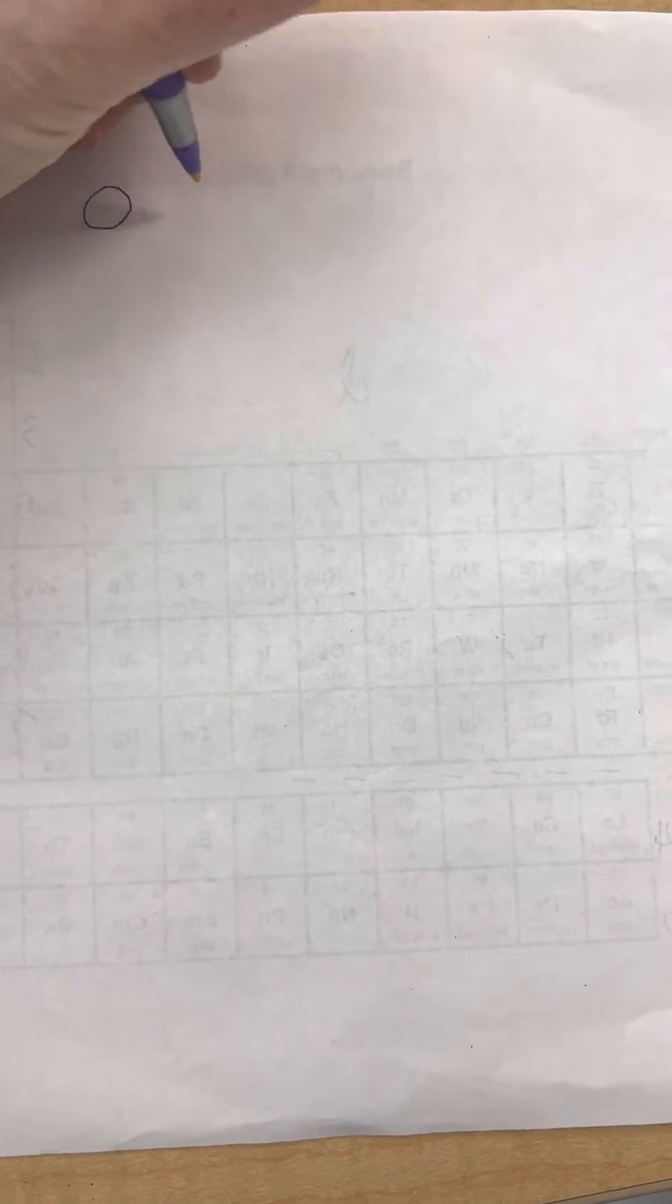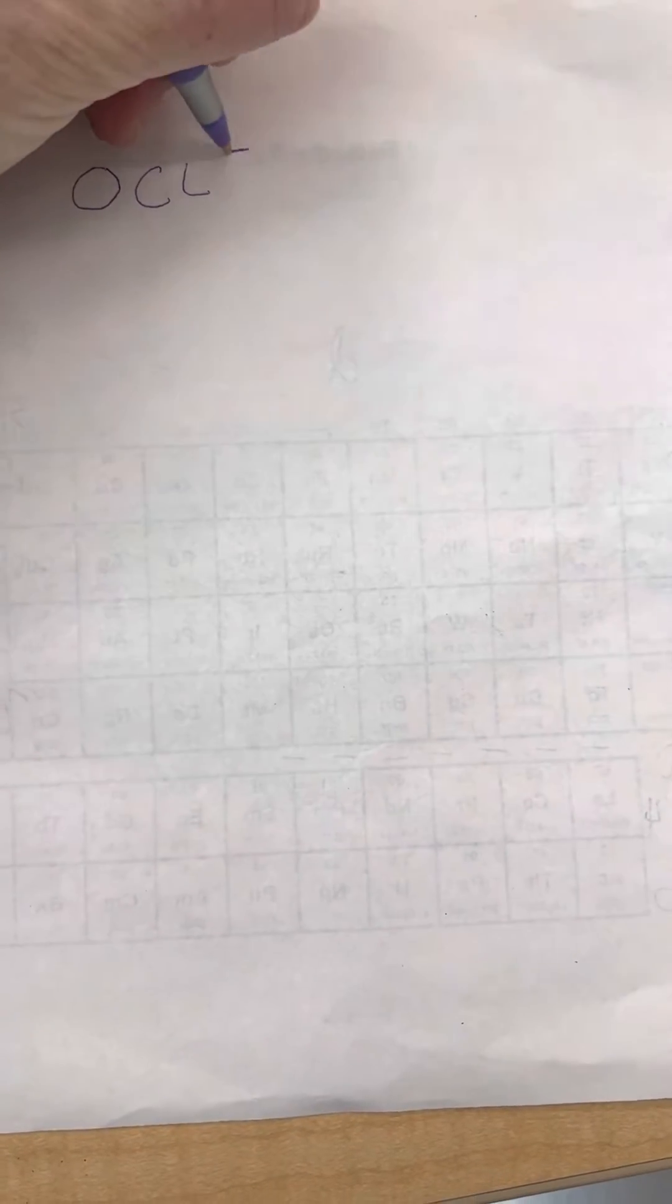Okay, so we have O, Cl negative. If we go to count the valence electrons, we're always going to go back to the very original steps. If you remember step one, we count valence.